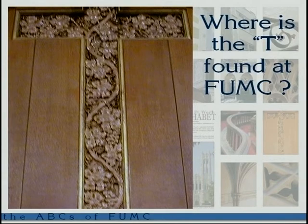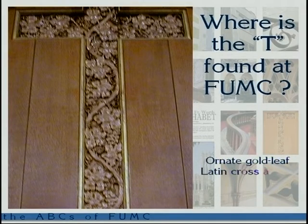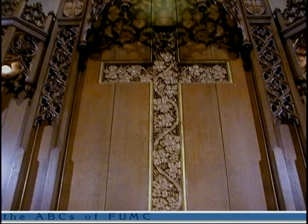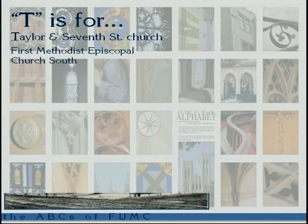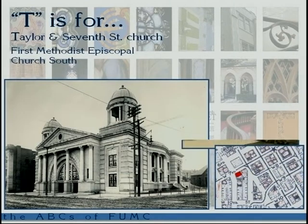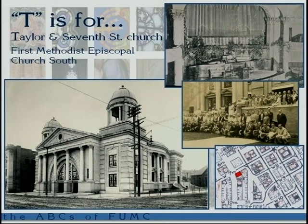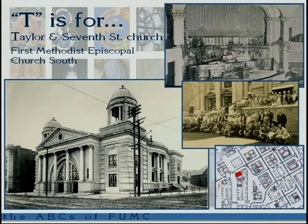Have you all seen the T before? It's part of the Latin cross above the choir loft. T is for the Taylor and Seventh Street church — it had two open dome towers on the Seventh Street side. When we occupied that church there were still dirt streets not yet paved, and electricity had just come to the area, so there were electric poles right outside. Inside, there was a large dome over the sanctuary, and the choir sang from the back balcony.